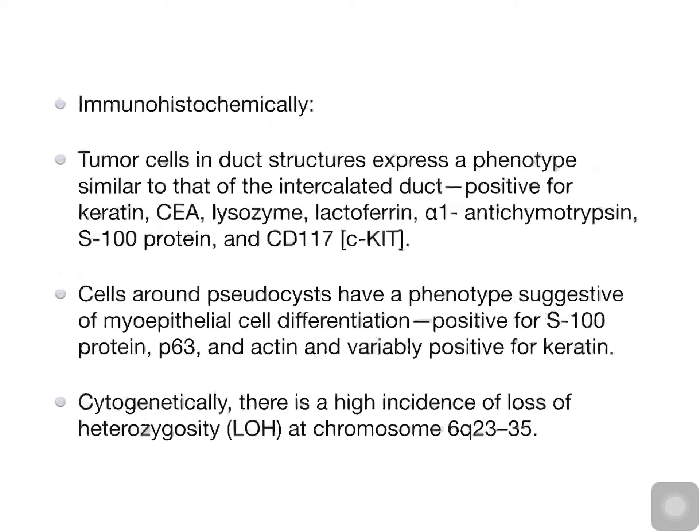Immunohistochemically, tumour cells in duct structures express a phenotype similar to that of the intercalated duct — positive for keratin, carcinoembryonic antigen, lysozyme, lactoferrin, alpha-1-antichymotrypsin, S100 protein, and CD117 (also known as CKIT). Cells around pseudocysts have a phenotype suggestive of myoepithelial cell differentiation — positive for S100 protein, P63, and actin, and variably positive for keratin.